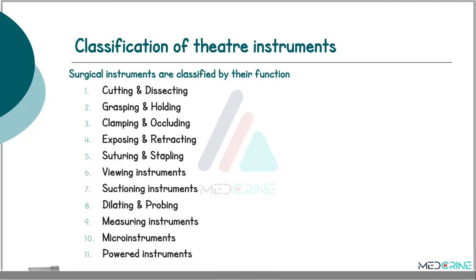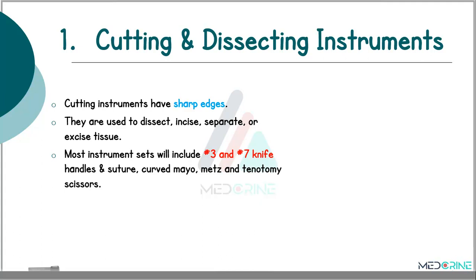Let's move ahead and look at each class of these instruments. Cutting and dissecting instruments have sharp edges. They are used to dissect or incise, separate or excise tissues.